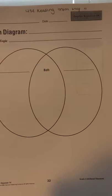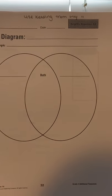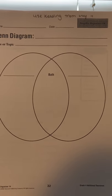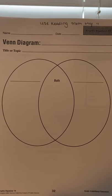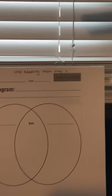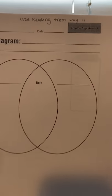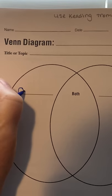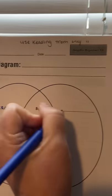So you are going to use this Venn diagram on Owen and Mosaic. My suggestion is you're going to put Owen in the first blank and then Mosaic.